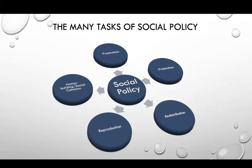Transformative social policy highlights five tasks of social policy: the production task, the protection task, the reproduction task, the redistribution task, and the nation-building or social cohesion task. The production task involves using social policy instruments concerned with raising and improving the productive capacity of the people. Education is a key mechanism for building human resource and skill capacity. Development requires skilled personnel, and education as a social policy instrument is geared toward creating a capable labor force.